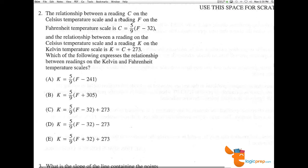Number two, the relationship between a reading C on the Celsius temperature scale and the reading F on the Fahrenheit temperature scale is C equals five-ninths times F minus 32.